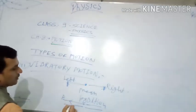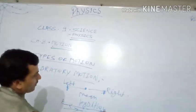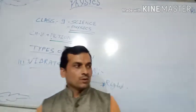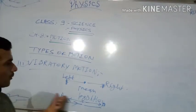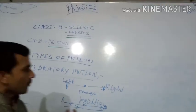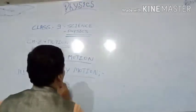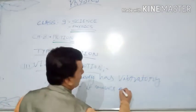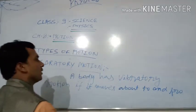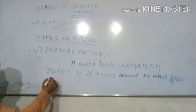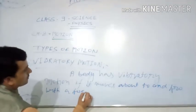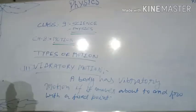That means O to A, and further in the B direction — to and fro. When we find to and fro motion, a body in to and fro motion is said to be in vibratory motion. We define: a body is in vibratory motion if it moves to and fro about a fixed point.